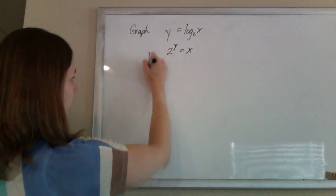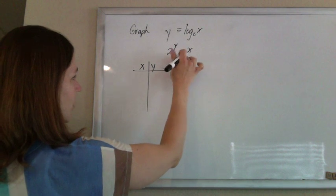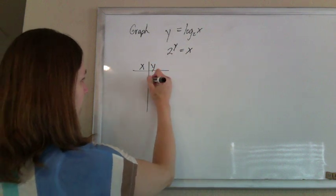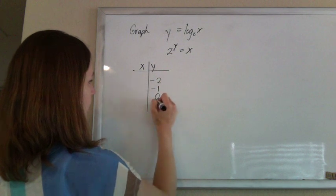So now if I were to make an xy chart, instead of plugging in stuff for x, I'm going to plug in stuff for y. So maybe a negative 2, a negative 1, a 0, a 1, and a 2.